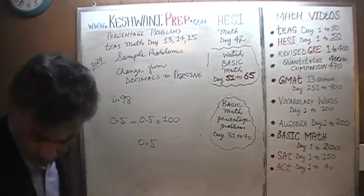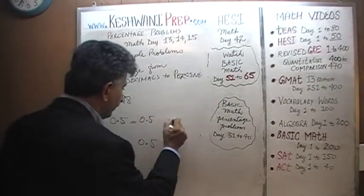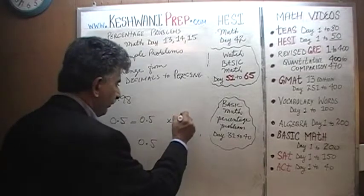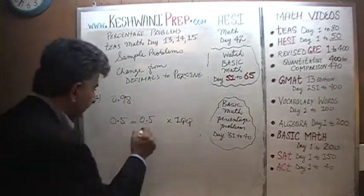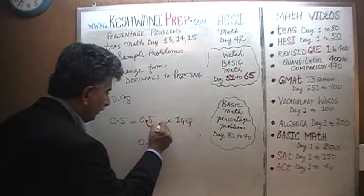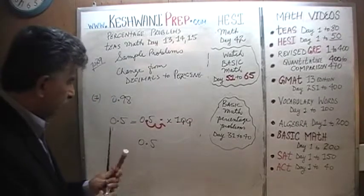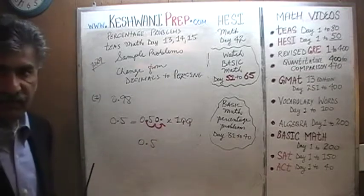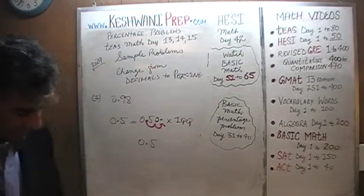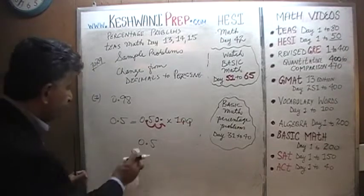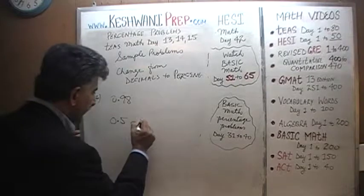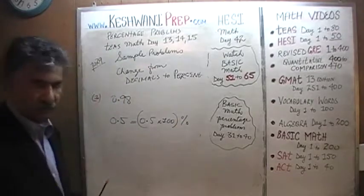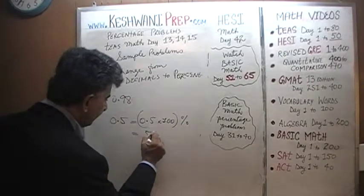When you multiply 0.5 by 100, because 100 has two zeros, you take the decimal point and move it two spots — one and two. You need to stick a zero in that spot. So 0.5 times 100 becomes 50, and 0.5 expressed as a percentage is 50%.